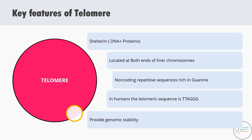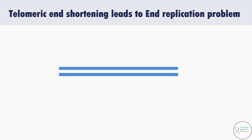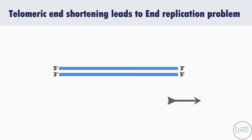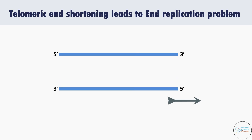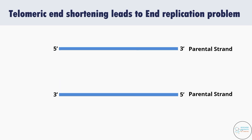Now let's see how and why telomeres get shortened. Suppose this is the last stretch of the chromosome and the replication fork is moving in this direction. The polarity of the lower parental strand is 3 prime to 5 prime in the direction of movement of the fork, so the upper strand would be 5 prime to 3 prime. As primase synthesizes an RNA primer against the lower parental strand, DNA polymerase synthesizes a new DNA strand continuously — this is the leading strand — and DNA polymerase proceeds progressively towards the other end. It won't be able to come back and displace the RNA primer.